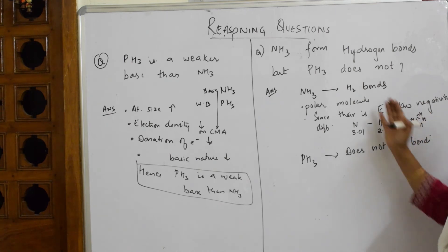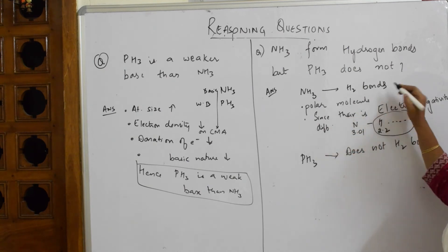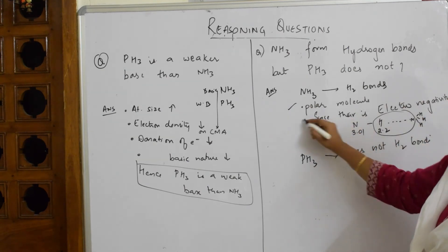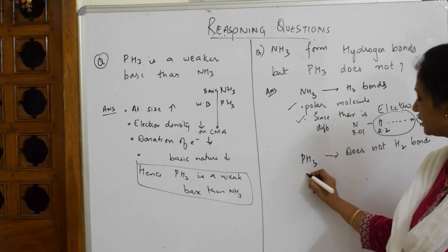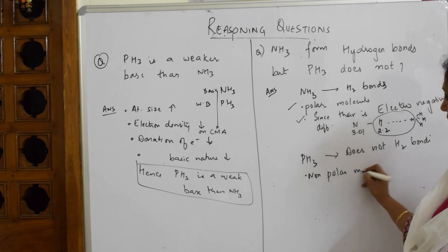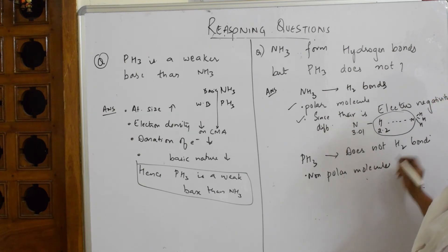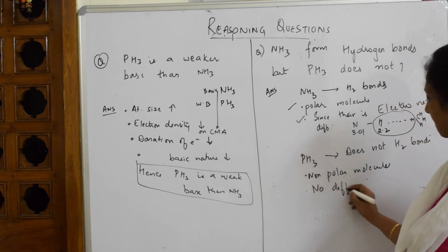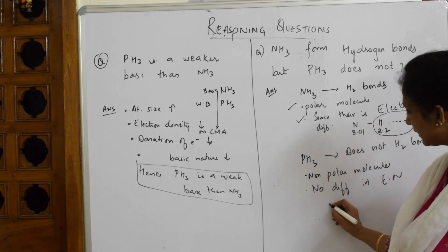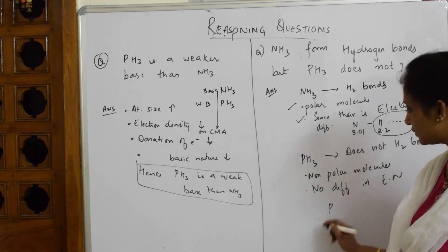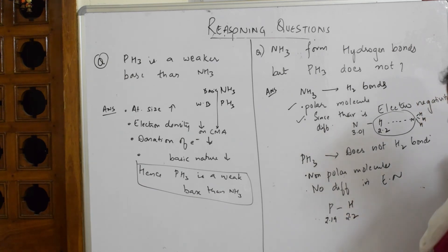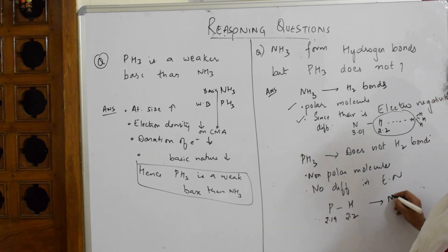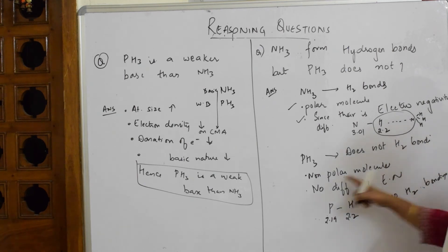So that's why NH₃ shows hydrogen bonding — it is a polar molecule due to electronegativity difference. Now for phosphine — PH₃ does not form hydrogen bonds because it is a non-polar molecule. How can you prove it is non-polar? Because there is no difference in electronegativity. The electronegativity value of phosphorus is almost 2.19 and hydrogen is 2.2 — there is almost no difference at all.